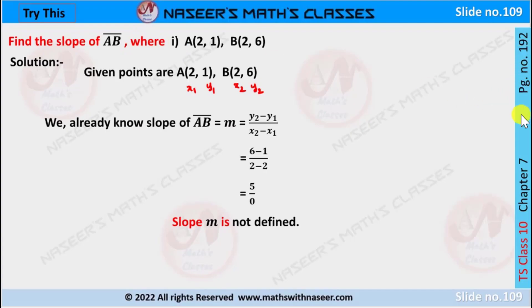Try this, page number 192, chapter 7, coordinate geometry. Find the slope of AB where A is (2,1) and B is (2,6).